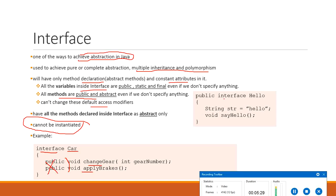Looking at another interface example with a String field 'str = Hello': by default, all data fields are public, static, and final even without specifying those keywords. Similarly, without specifying public or abstract, the method in this interface is by default public and abstract. So this interface contains only one method, 'sayHello'.